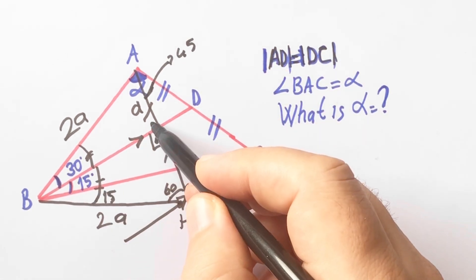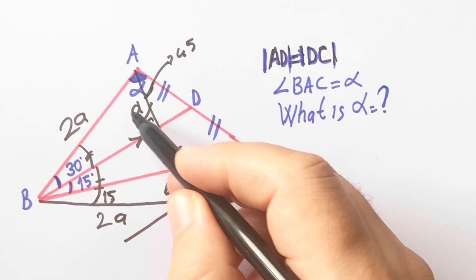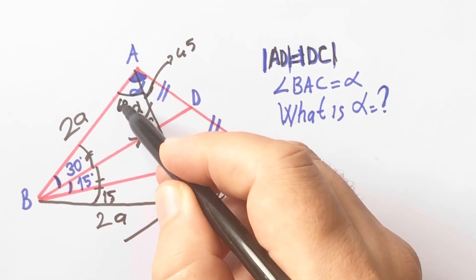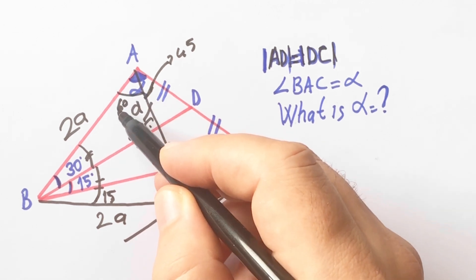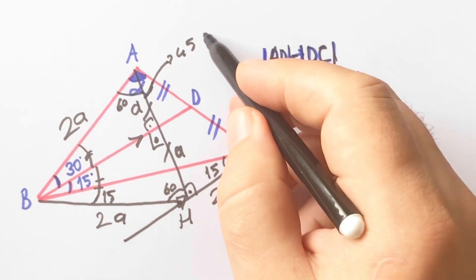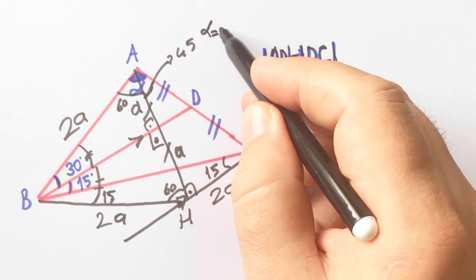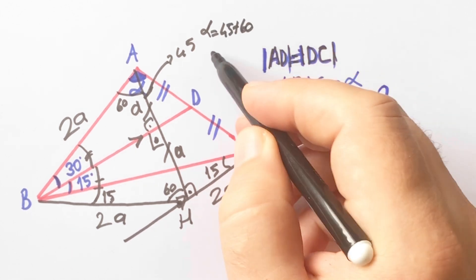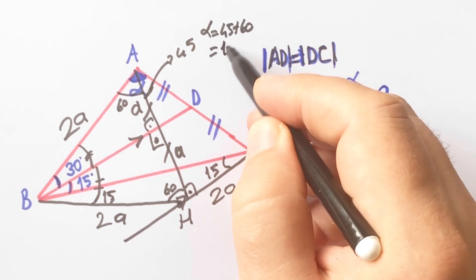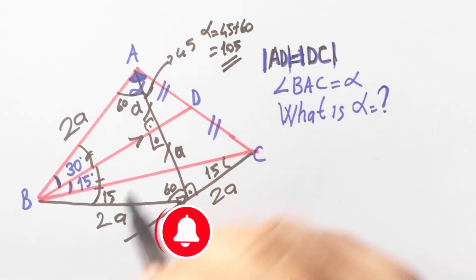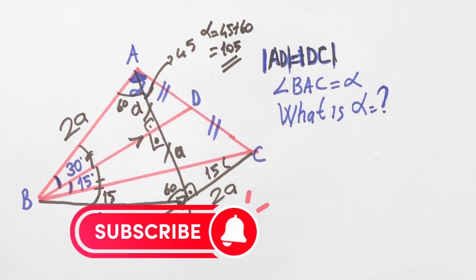So finally here will be 45 degrees, and here will be 60 degrees. Alpha is equal to 45 degrees plus 60 degrees, and we find alpha equals 105 degrees.